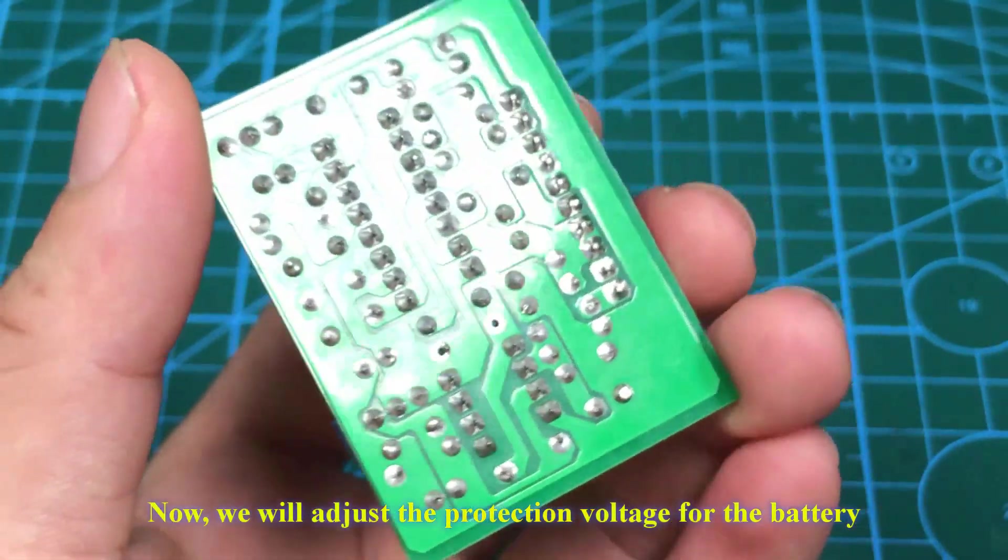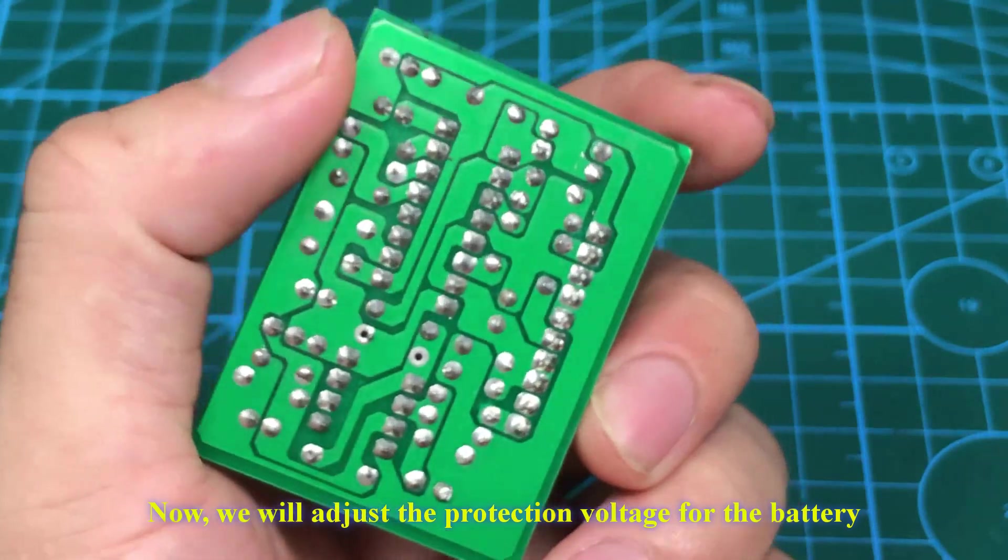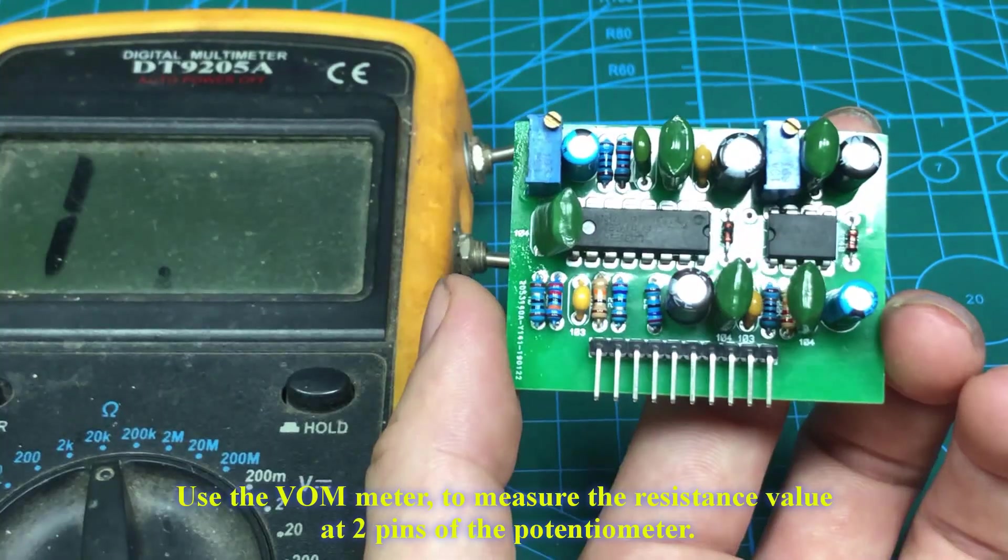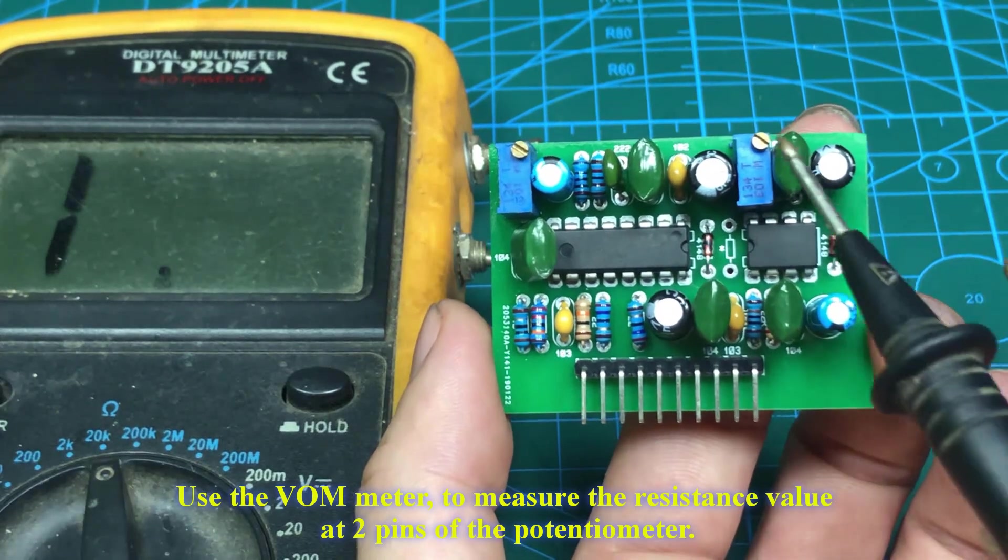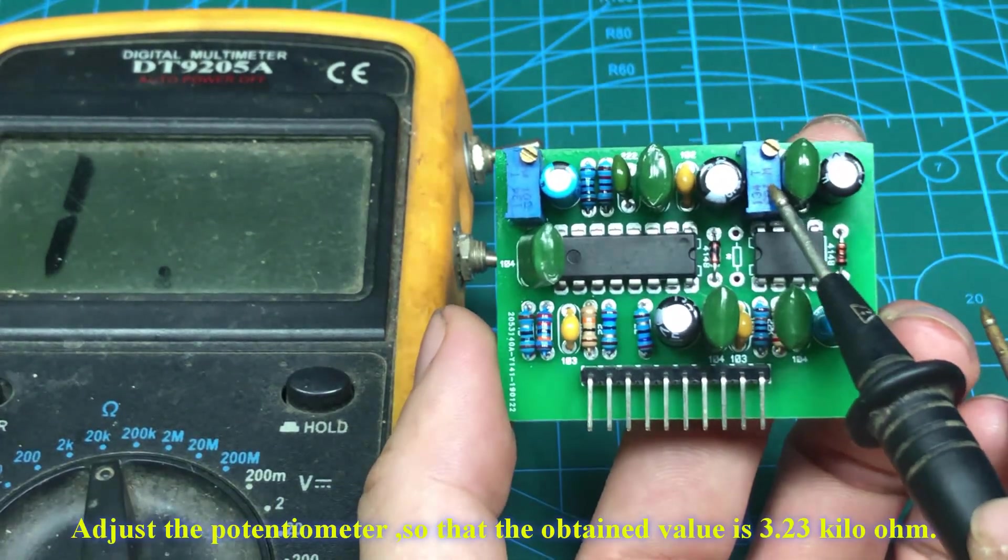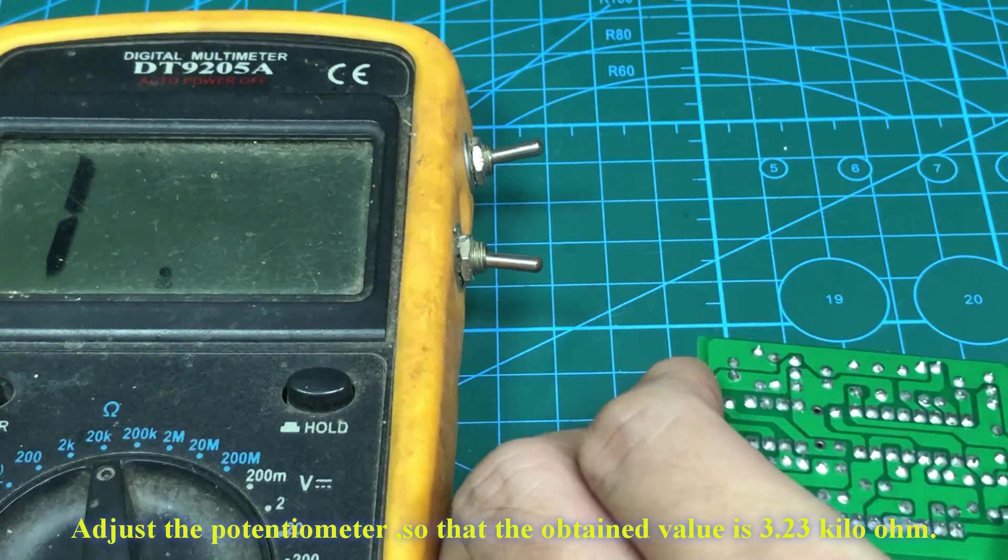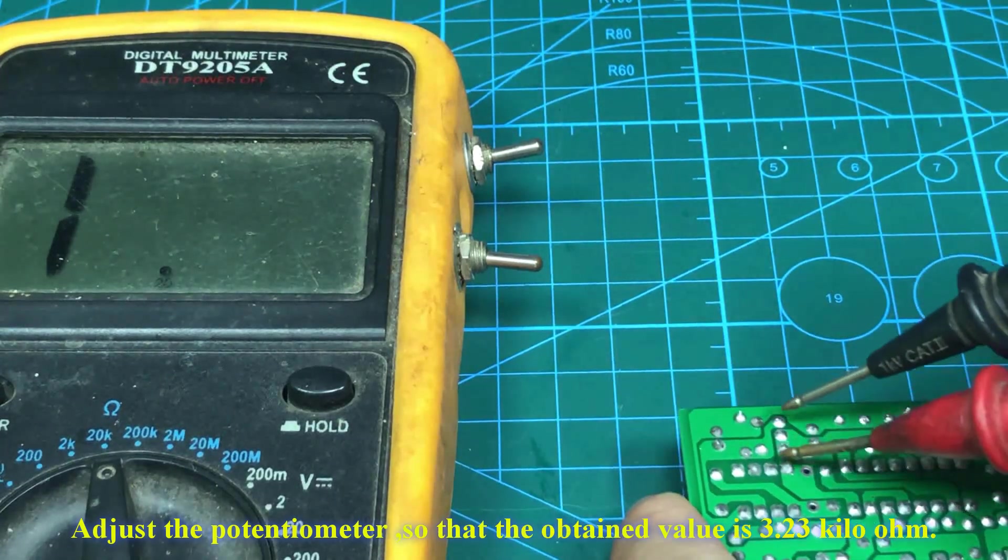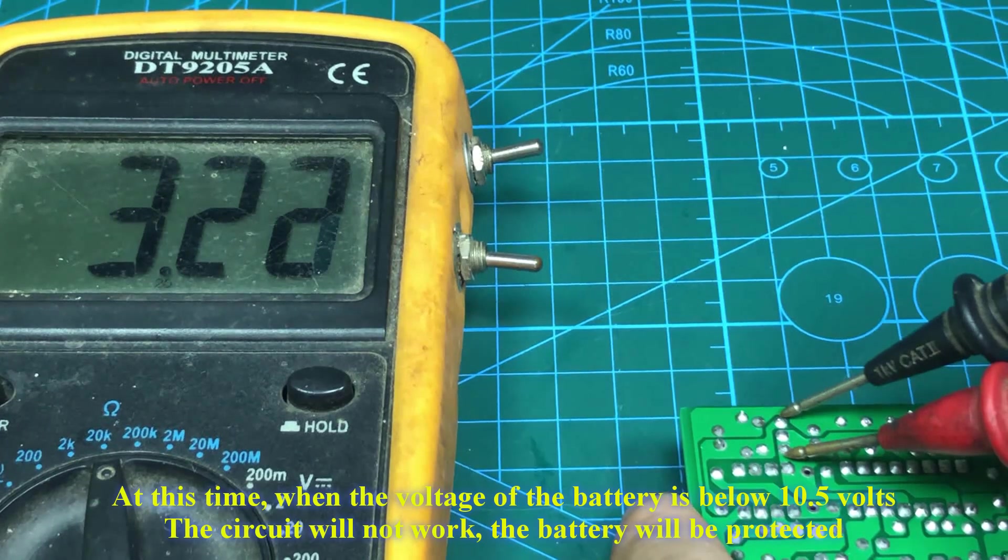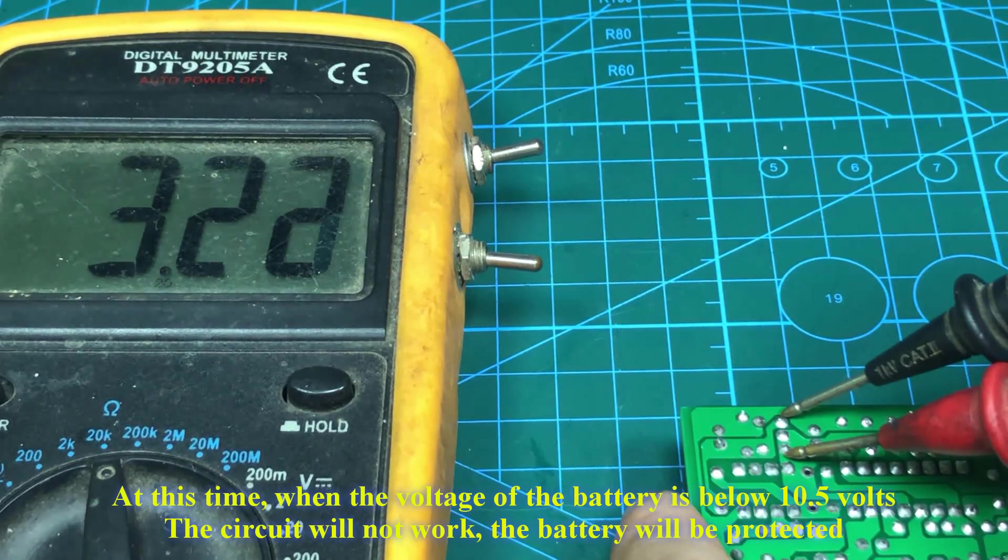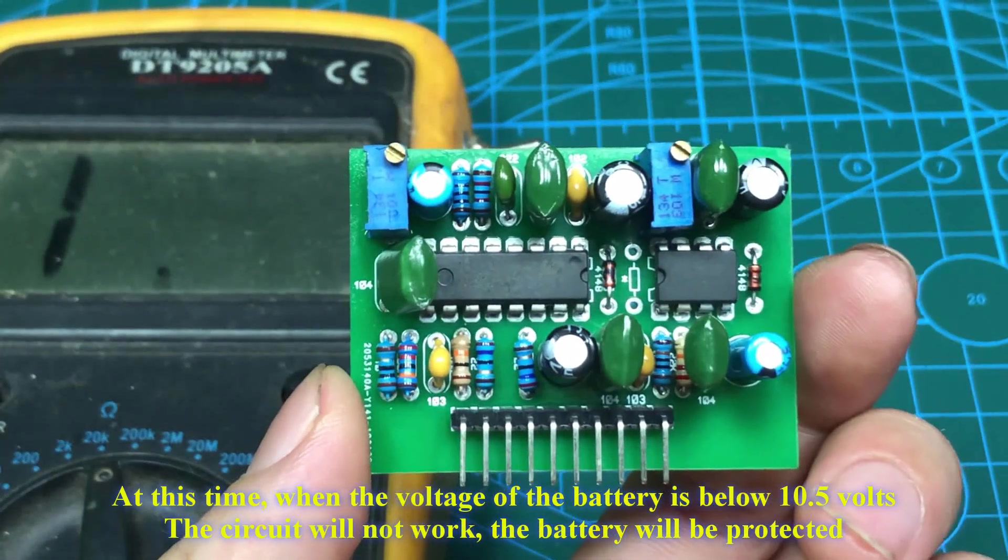Now we will adjust the protection voltage for the battery. Use the ohm meter to measure the resistance value at two pins of the potentiometer. Adjust the potentiometer so that the obtained value is 3.23 kilohms. At this time, when the voltage of the battery is below 10.5 volts, the circuit will not work. The battery will be protected.